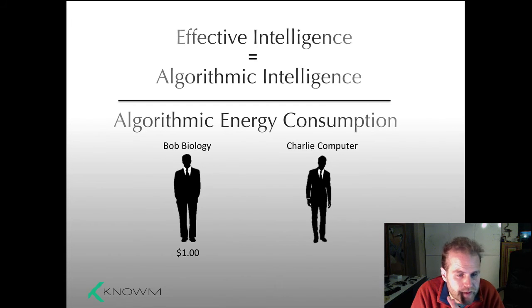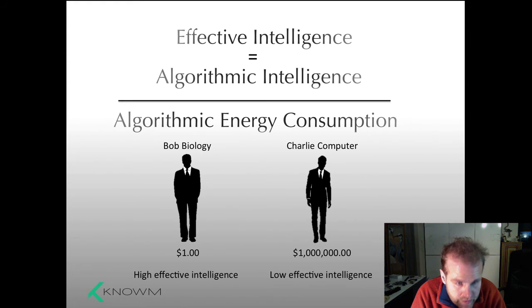Now imagine Bob charges you a dollar for his answer and Charlie the Computer charges you a million dollars. This may seem outrageous, but this is about what it is right now. Companies like Google, like Facebook, like these big technology companies—one of their recruiting tools is to say, 'If you're a machine learning developer, if you're a data scientist, come work with us. We have the data and we have massive supercomputers that you're going to need to do it.' And it's true. Right now you need that computing power in order to tackle these problems, and these supercomputers are expensive and they gobble up energy left and right. So what has more effective intelligence? Bob Biology has significantly more. It gives you the same quality answers but costs much, much, much less. That's what we're after. That's what really hits home in the real world when we deploy these things. That's what's going to change the world.